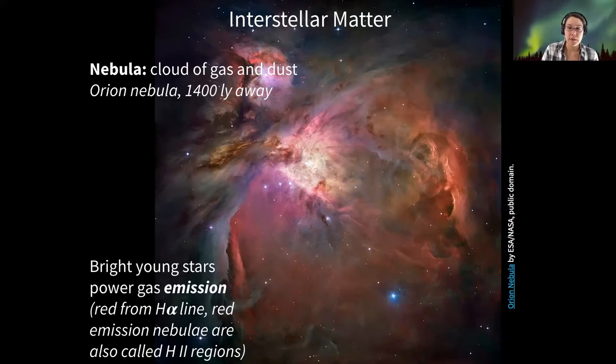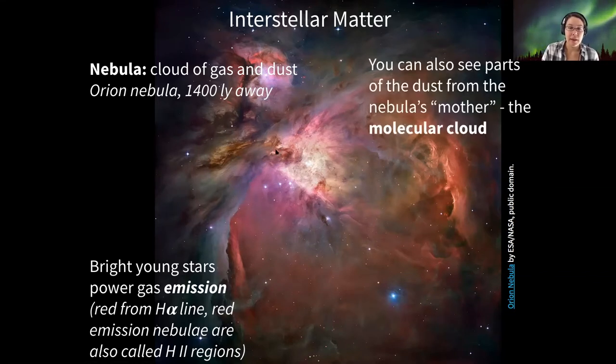So this is one example of interstellar matter. Like I said, that dust is the kind of dark images or features on this image, whereas the red glow is where there is lots of hydrogen gas.